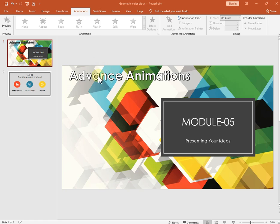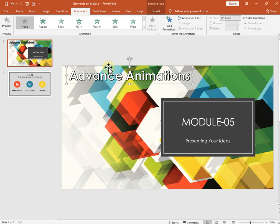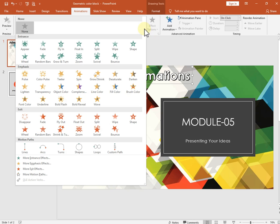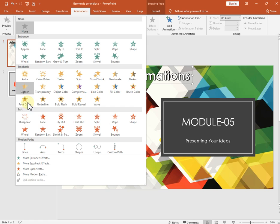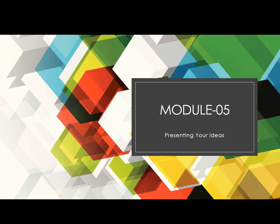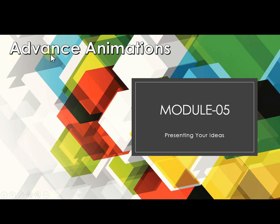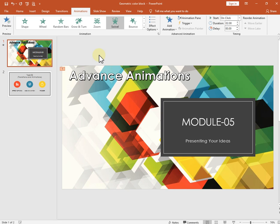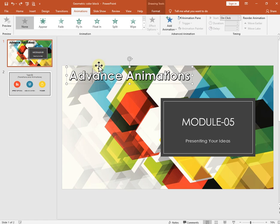First of all, whenever you insert any animation on any object, just select the object first. Objects include text, images, pictures, clip arts, and charts. Before inserting any animation, just click on the object. You can see multiple animation types: entrance effects, emphasis, exit, and motion paths. With entrance effects, when you show the slide it will appear on click.